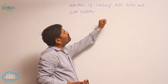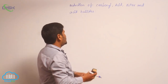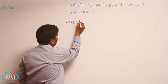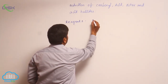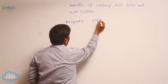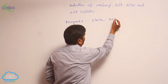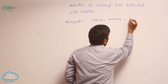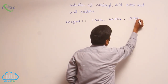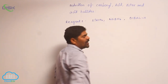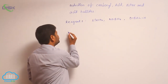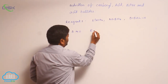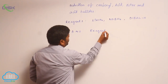Reduction of carbonyl compounds — acid esters and acid halides. The structures of reagents were already discussed earlier: lithium aluminum hydride, sodium borohydride, and DIBAL-H (diisobutyl aluminum hydride). We will now look at a table with reagent name, substrate, and product.